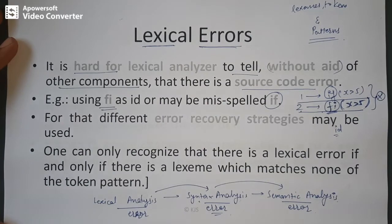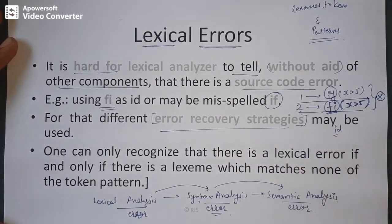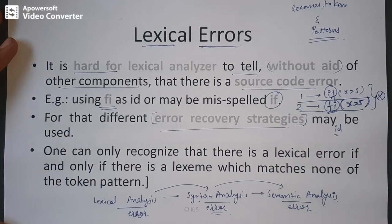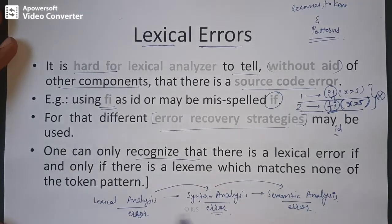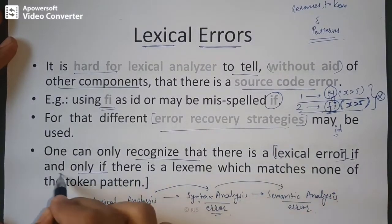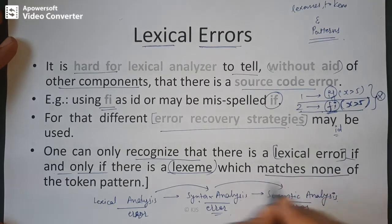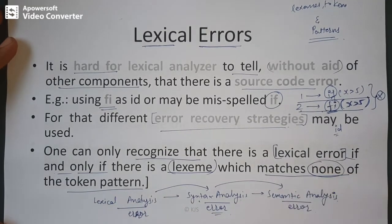So lexical error can be identified using error recovery strategies in combination with the lexical analyzer. A lexical error can be said to occur if and only if there is a lexeme that matches none of the token patterns — if there is no matching token pattern, then you get a lexical error.